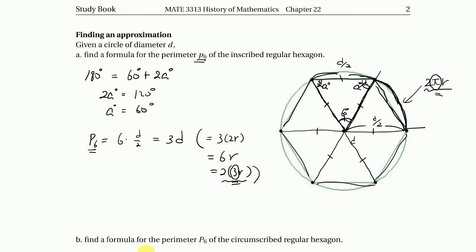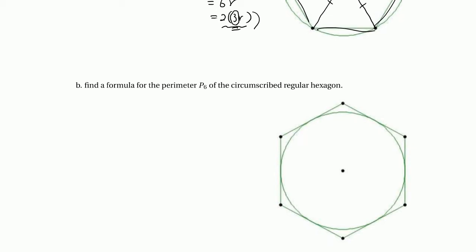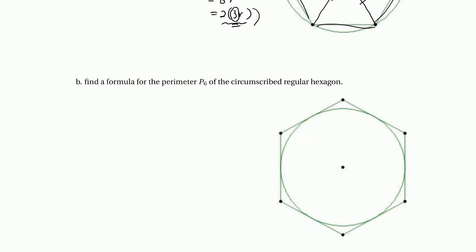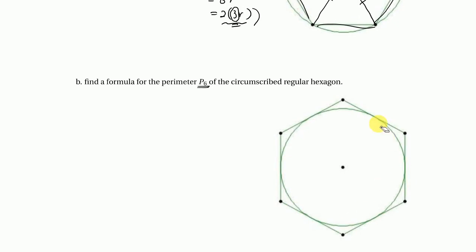Now let's find the perimeter of a circumscribed regular hexagon around the given circle. The previous inscribed perimeter is lowercase p sub 6, and the perimeter of the circumscribed regular hexagon is uppercase P sub 6. Be careful about the notations.